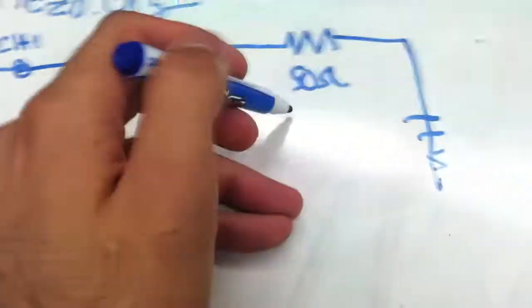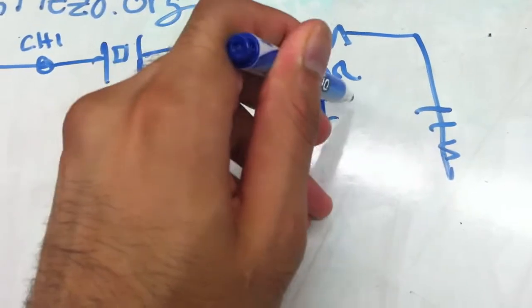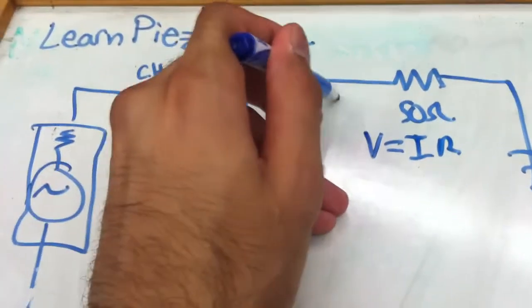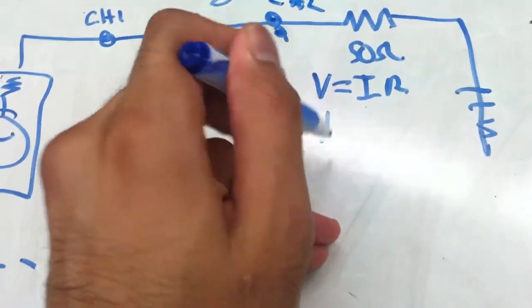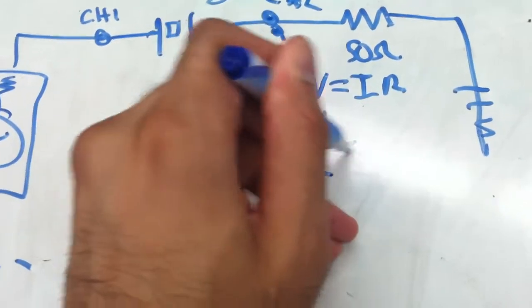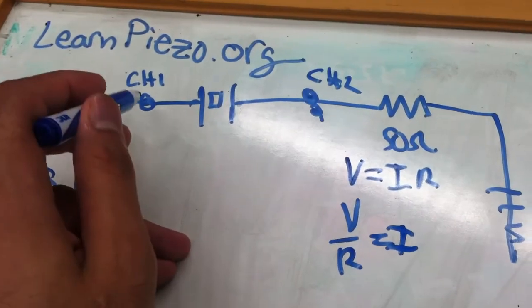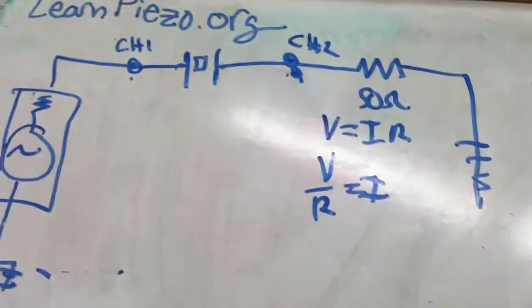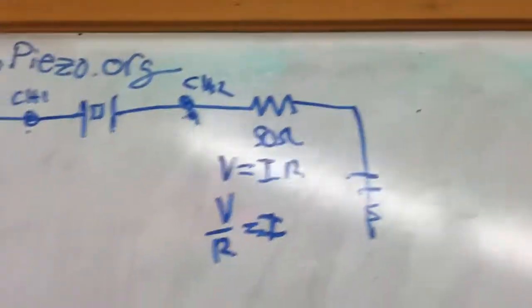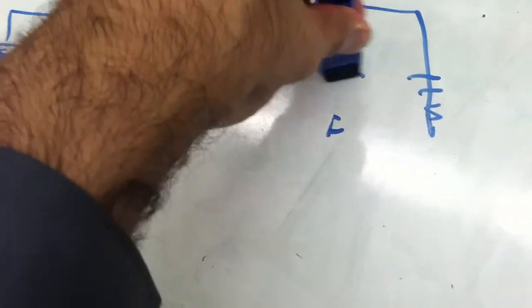Over a resistor, voltage equals current times resistance. So we can measure channel 2 voltage — we know the voltage and the resistance — and therefore we always know the current going through the system. If you subtract channel 1 and channel 2 you get the voltage over just the piezo element, because channel 1 measures relative to ground, which is how oscilloscope probes generally work.